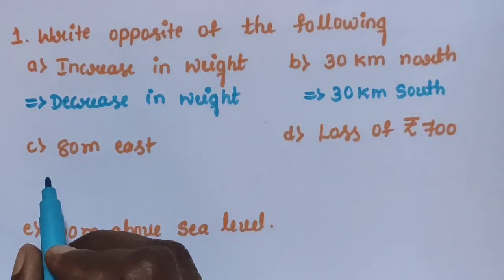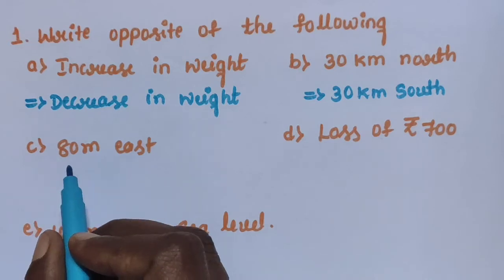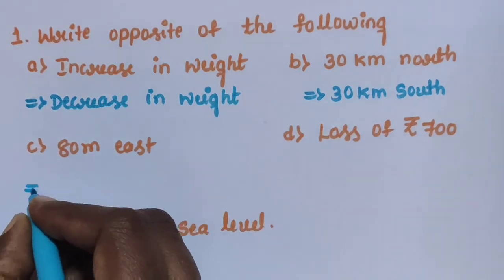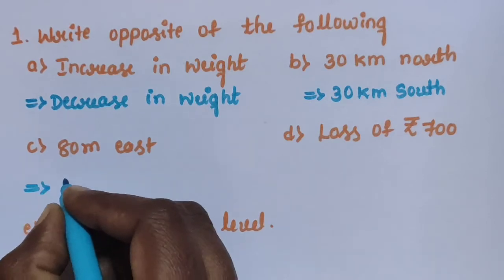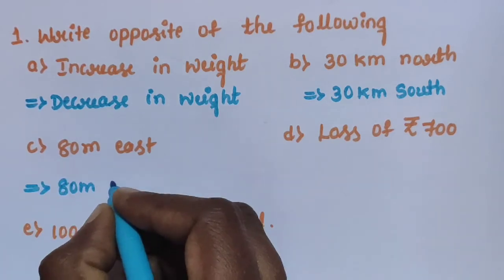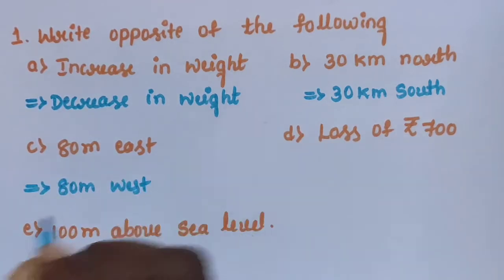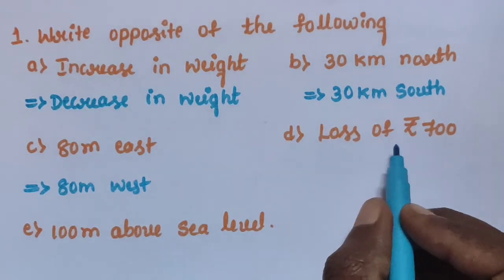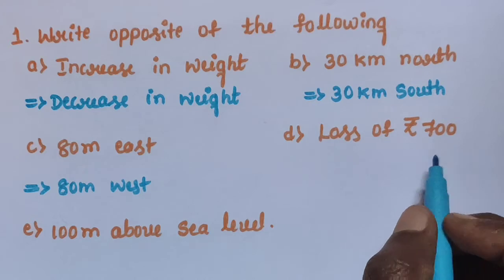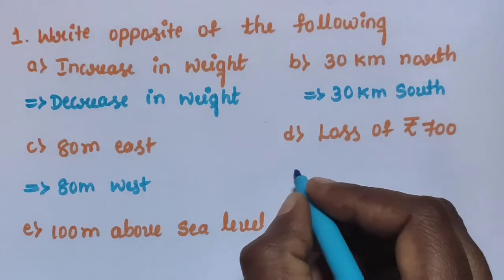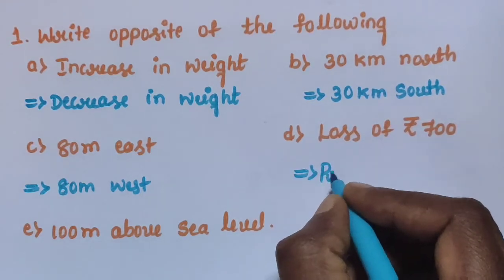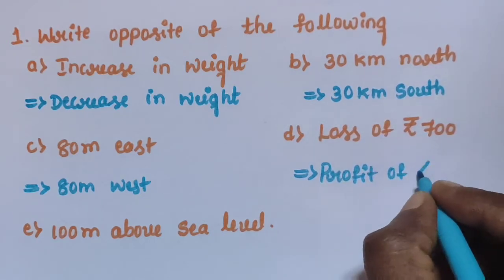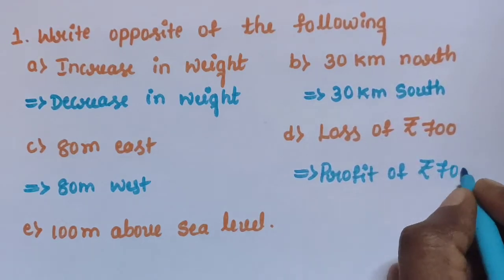Sub-question C: 80 Meter East — the answer is 80 Meter West. Sub-question D: Loss of Rupees 700 — the answer is Profit of Rupees 700.